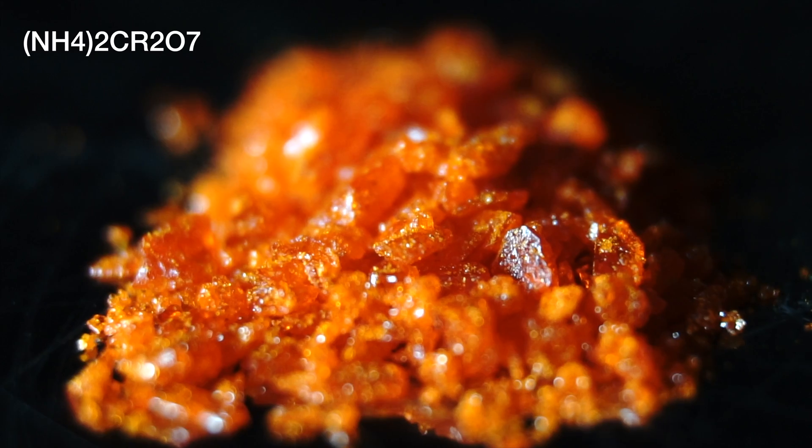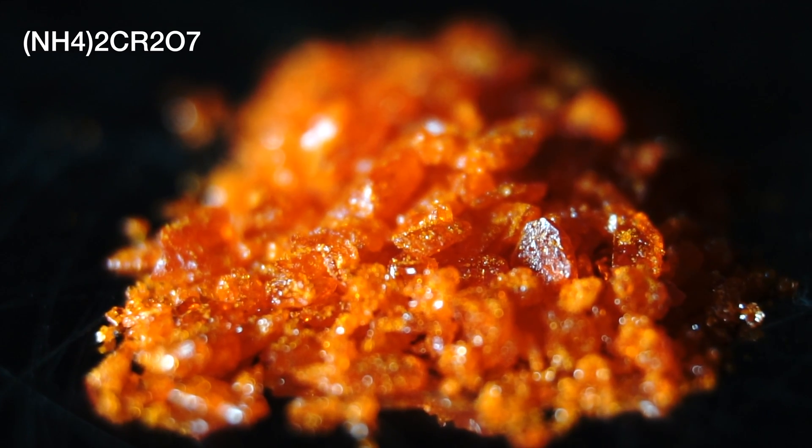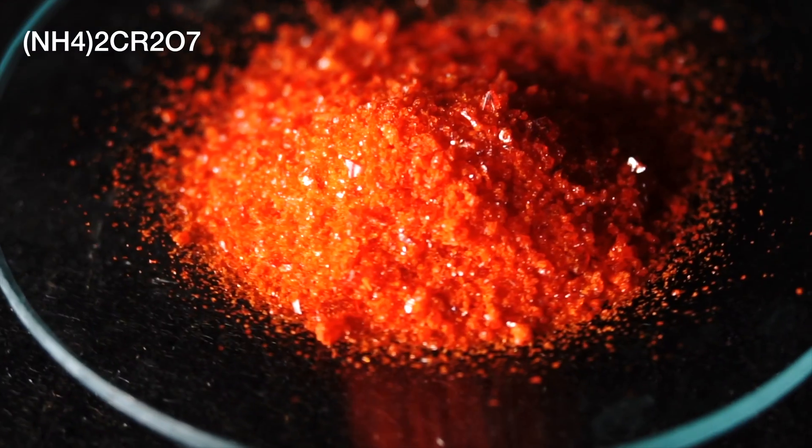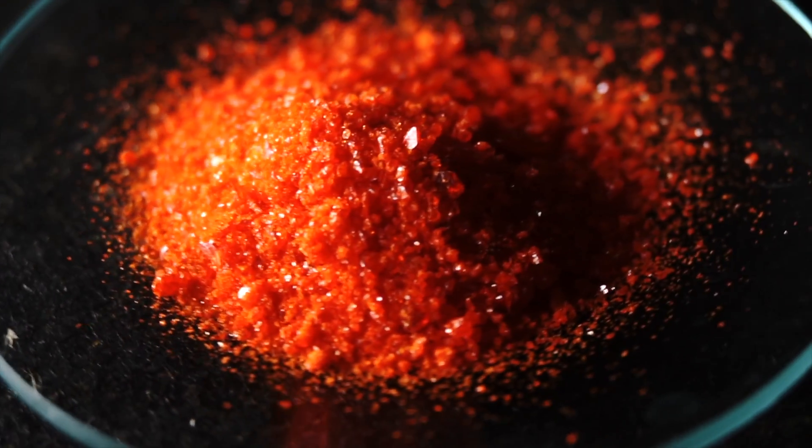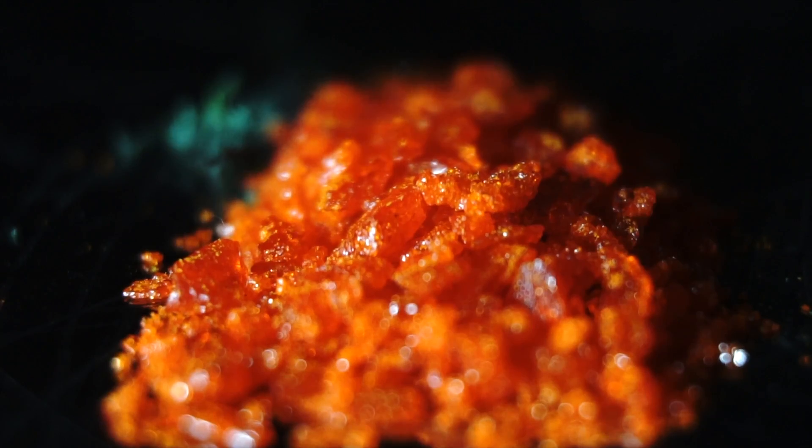Ammonium dichromate is an inorganic compound with the formula listed here. In this compound, chromium is in the plus-six oxidation state, commonly known as hexavalent chromium.